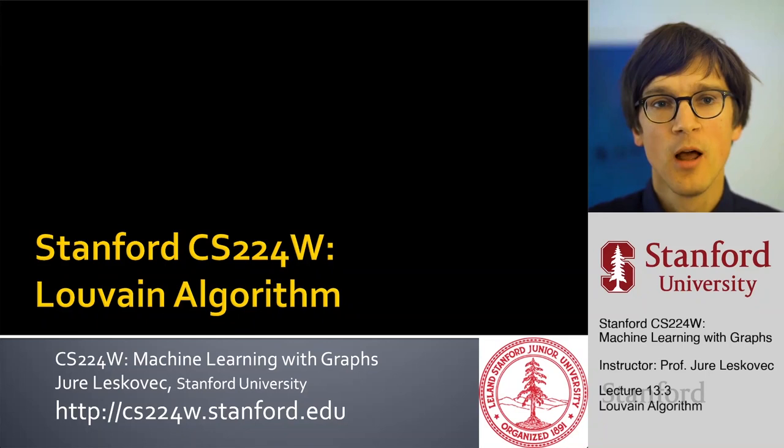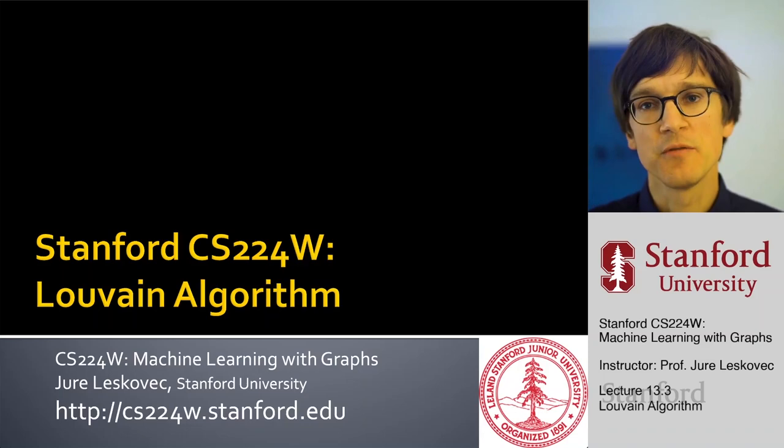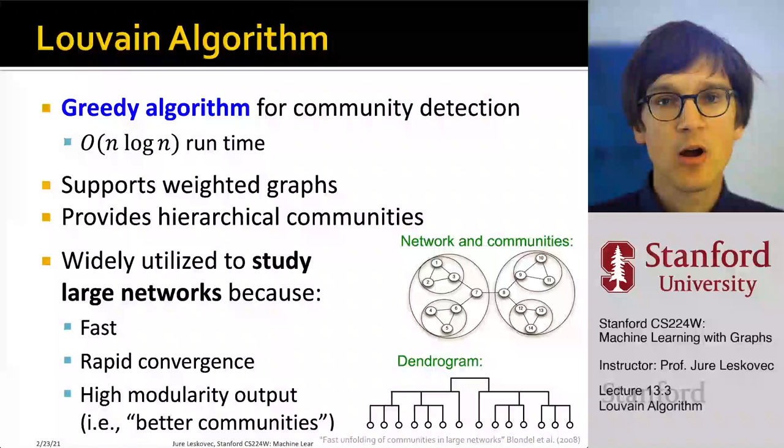The algorithm that allows us to identify high-modularity score communities is called the Louvain algorithm, from the University of Louvain in Belgium — that's why the name. It is a very scalable and very popular algorithm. It's kind of a de facto thing you would use if you want to partition the network into a set of clusters.